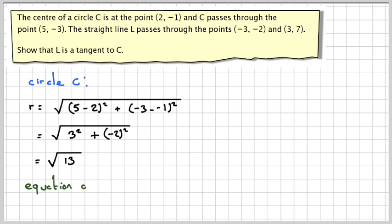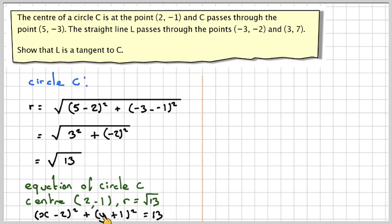Using that as the centre, then the equation of the circle C, centre (2, -1), radius √13, will be (x - 2)² + (y + 1)² = 13, because the y-coordinate is -1, equal to the radius squared, which is 13.